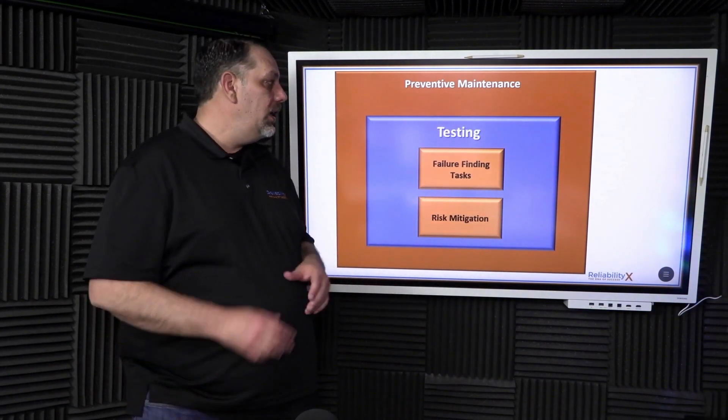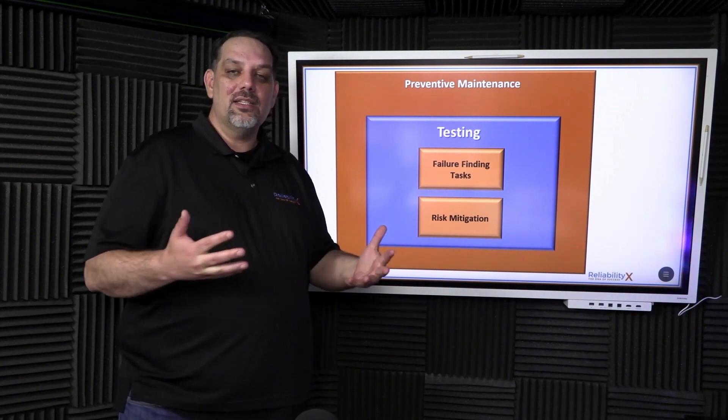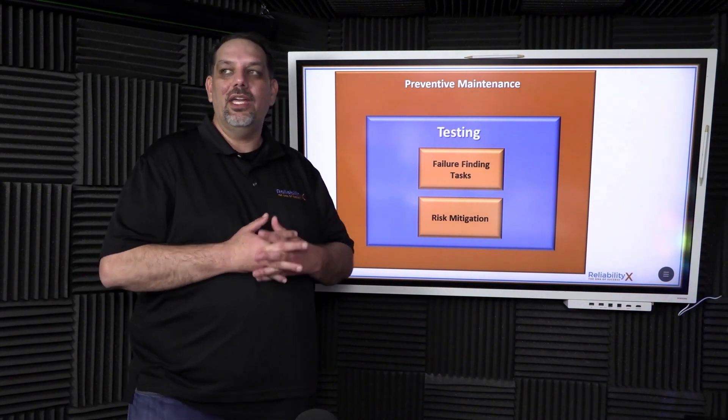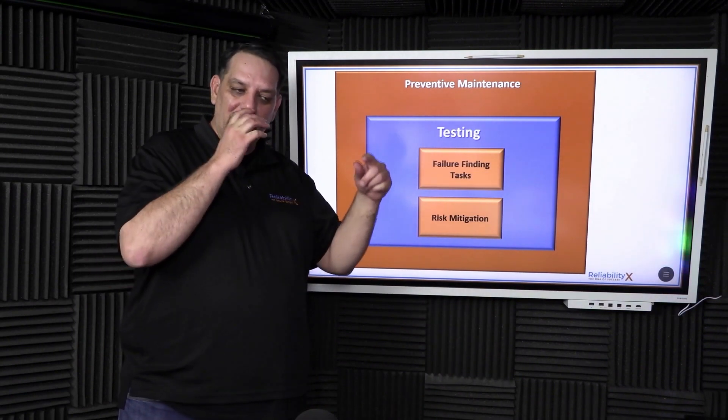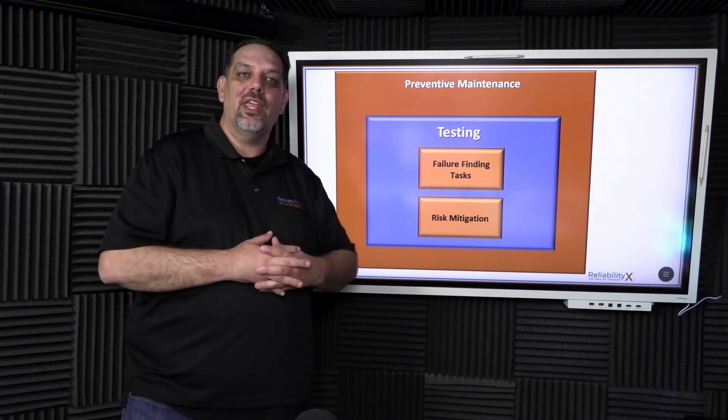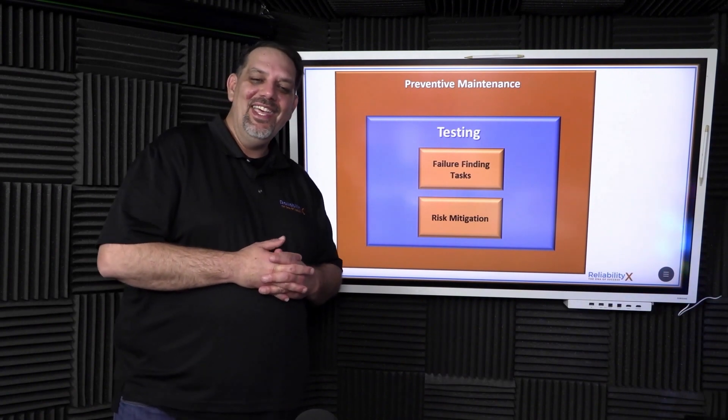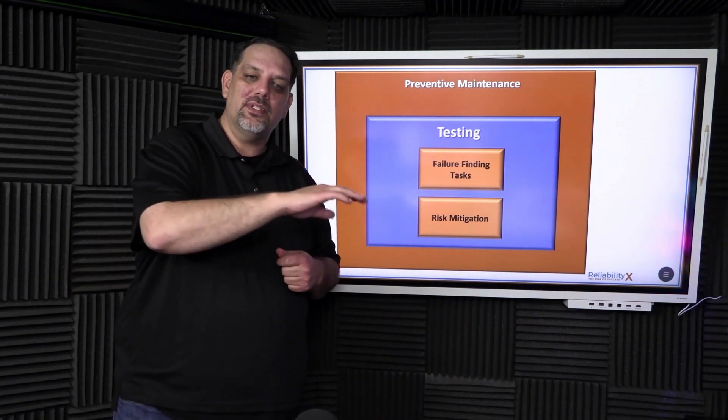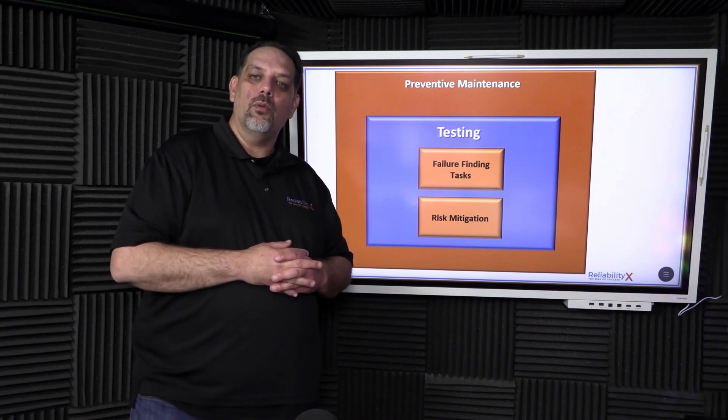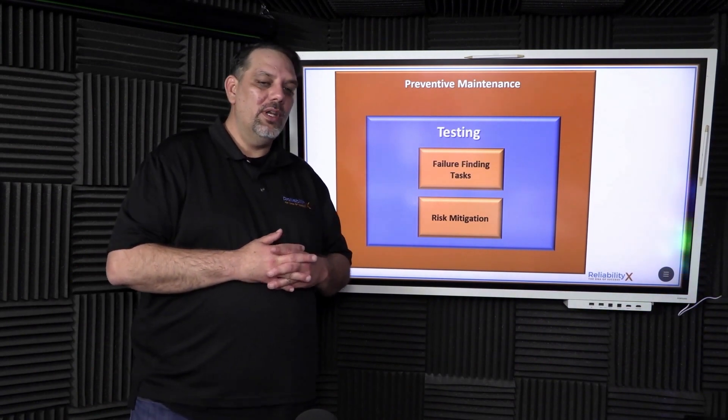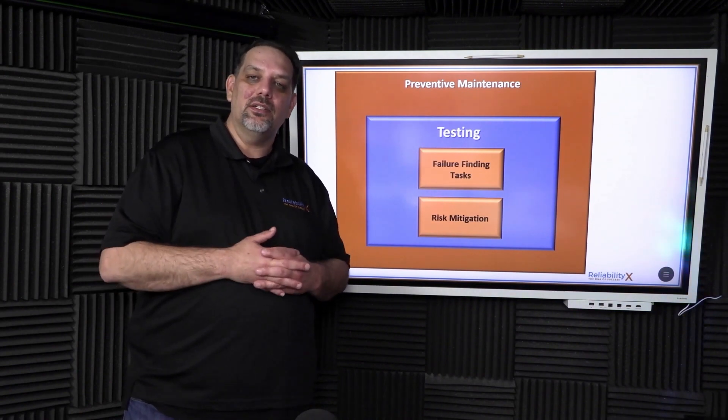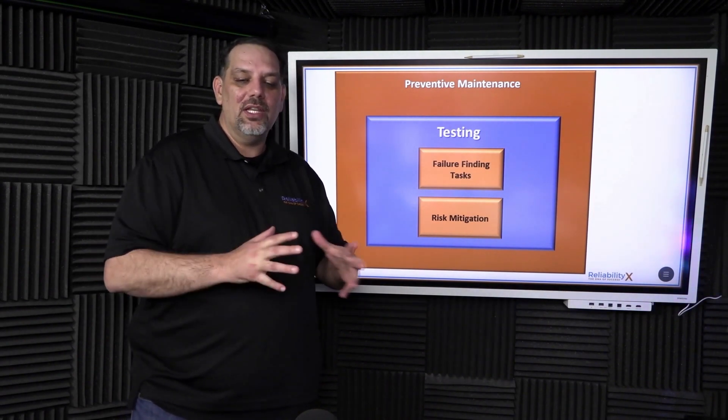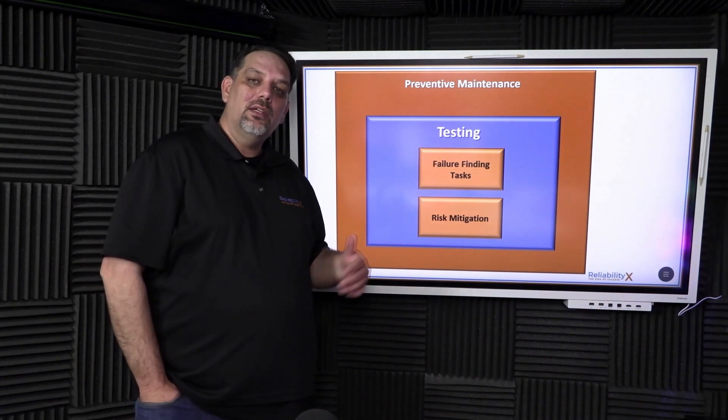And then the next one is testing. So testing is a lot like calibrations. You have failure finding tasks and you have risk mitigation tests. For example, checking emergency lights. That's a failure finding test to ensure that when you need them, they will all work. Another idea of testing would be testing all the e-stops down the line to ensure that they all work properly. That's not only a failure finding task, but it's a risk mitigation test, given the fact that you could be running, you pull on the cord and nothing happens when somebody's arm's stuck in a machine.